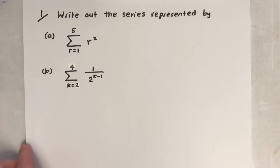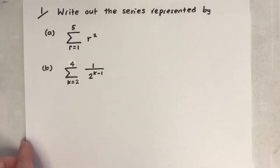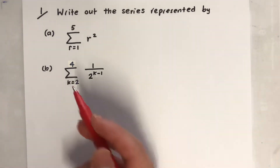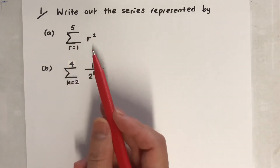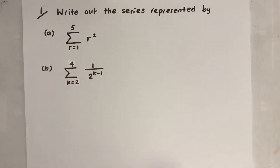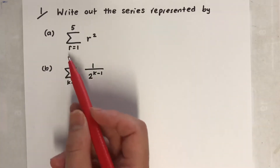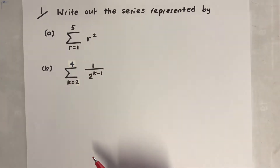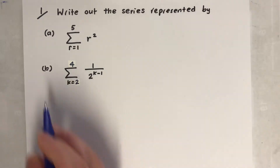Okay, first question: write out the series represented by each sigma notation. Part a goes from 1 to 5 with formula r squared. Part b starts from 2 to 4 with formula 1 over 2 to the power of k minus 1.